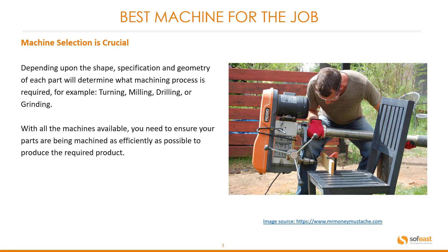Choosing the best machine for the job. Machine selection is crucial — depending on the shape, specification, and geometry of each part will determine what machining process is required. For example, turning, milling, drilling, or grinding. With all the machines available, you need to ensure your parts are being machined as efficiently as possible to produce the required product.